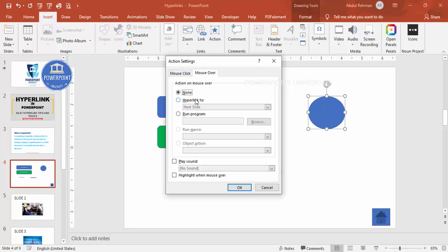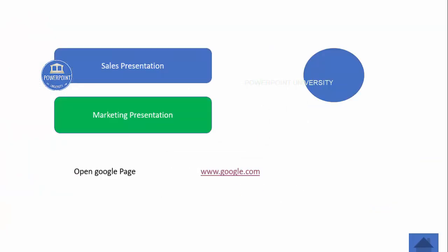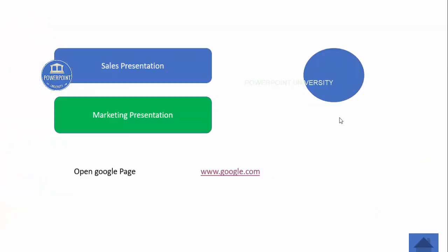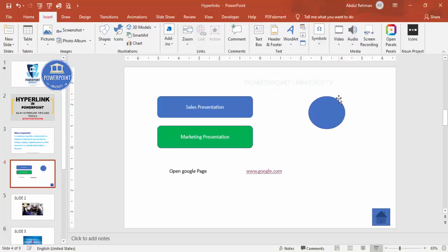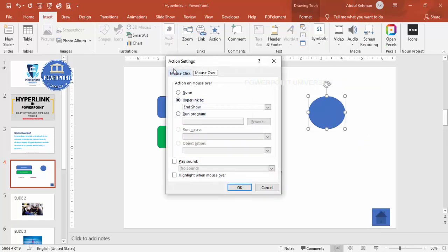For example, using Mouse Over, I can set the action to 'End Show.' When running the slideshow, the moment I hover over the button, it immediately ends the show — without clicking. That's the key difference between Mouse Click and Mouse Over in the Action settings.